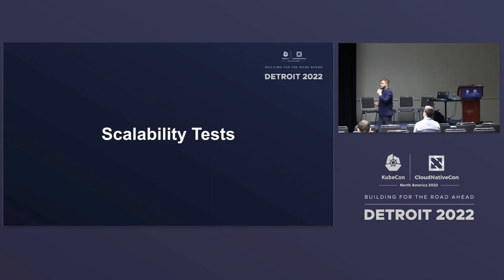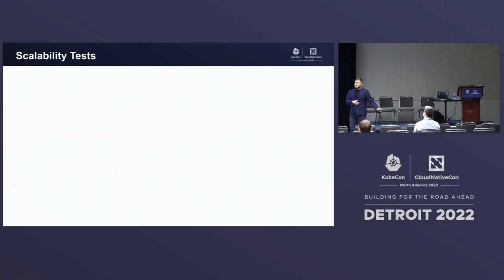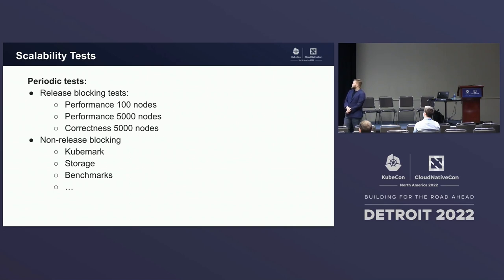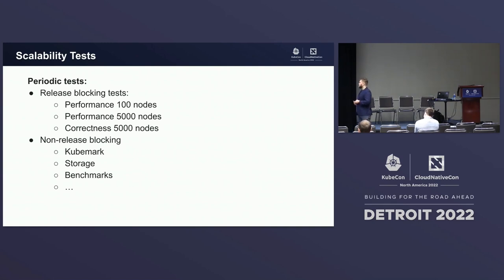Now we move to the scalability tests — what kinds of tests we actually run to ensure Kubernetes is scalable. There are two types of periodic tests: release-blocking tests, which include performance tests for 100 nodes and 5,000 nodes run on real clusters, and a correctness test for 5,000 nodes. Performance tests are about speed — pod startup latency, control plane latencies — while correctness tests verify that Kubernetes features still work correctly at 5,000 nodes.